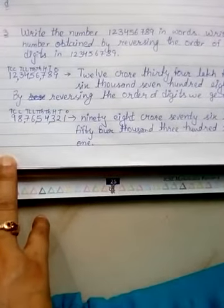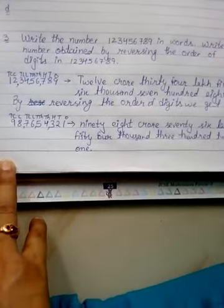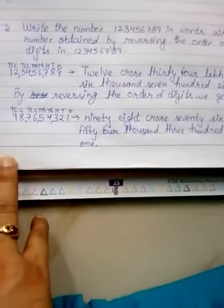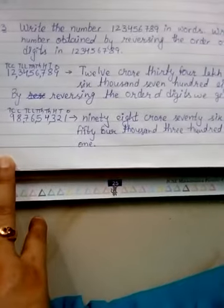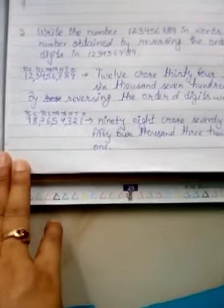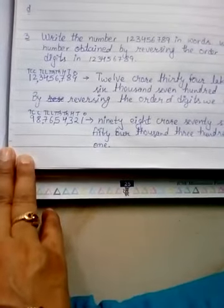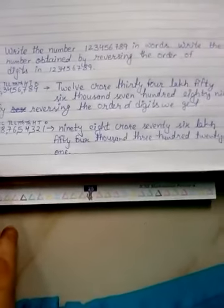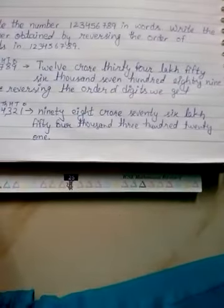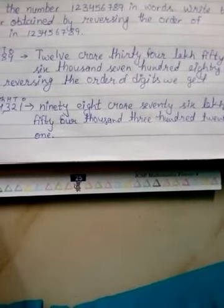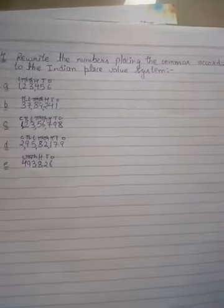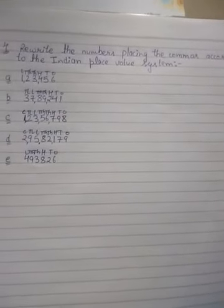Now by reversing the order of the digits, we get 987654321. Reversing the order of digits means the digit in the ones place — which is 1 — will become the leading digit, and the digit in the highest place will move to the ones place. That is question number three. Now question number four: rewrite the number placing the commas.